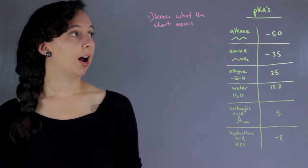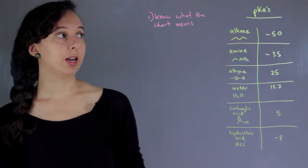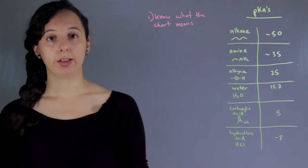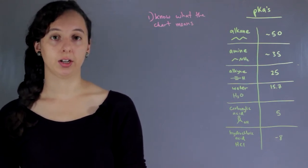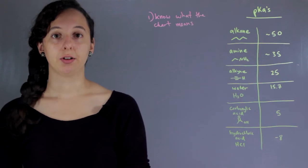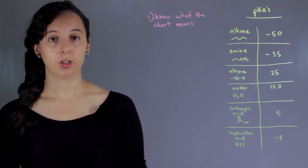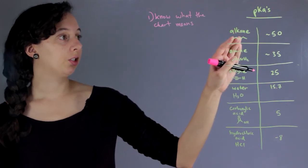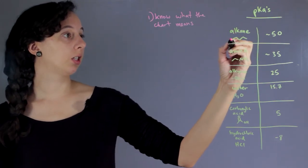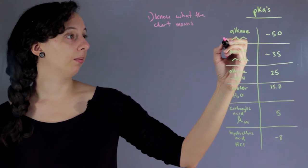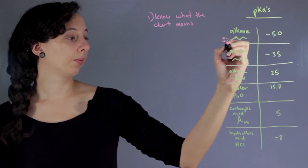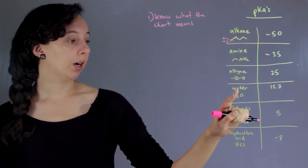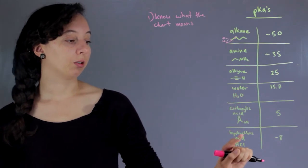In this case, pKa is basically a measure of how willing a hydrogen atom is to become disassociated from a given molecule, and it changes based on functional group. For instance, you have alkanes up here, which is a functional group that consists of single bonds of carbon and hydrogen. And then you have water, and over here you have hydrochloric acid.